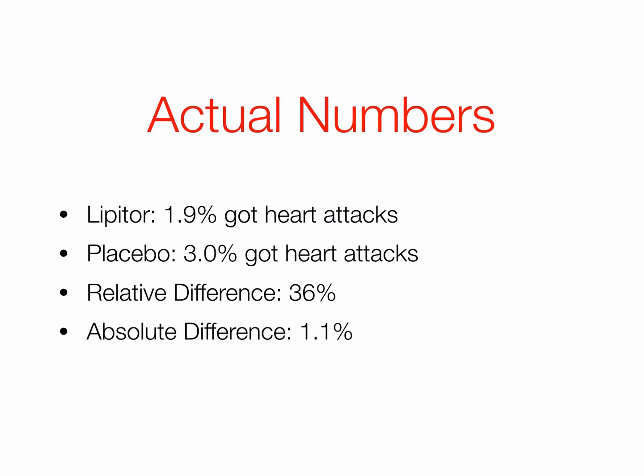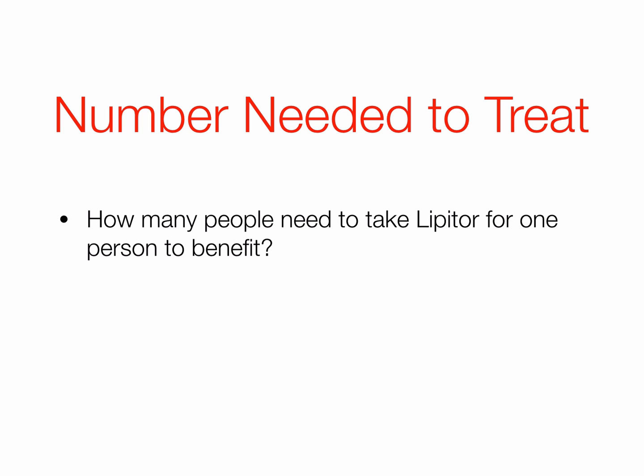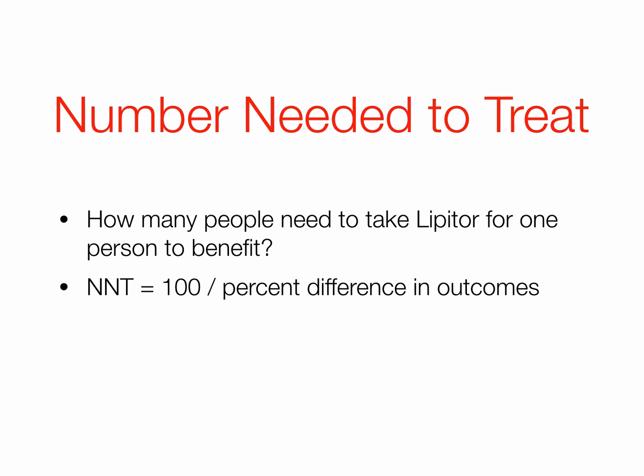The other 99 will not be helped at all. So that's where we get to another important number you want to ask your doctor: what's the number needed to treat — the NNT — the number who have to take Lipitor in order for one person to benefit. The NNT is simply 100 divided by that percent difference in outcomes — not the 36% relative risk, but the absolute risk difference, in this case 1.1%. So 100 divided by 1.1% is 90.9, meaning 91 people have to take Lipitor before one person benefits.